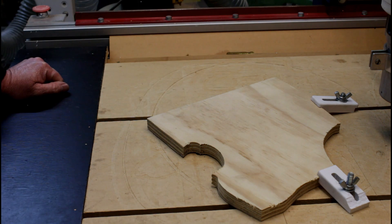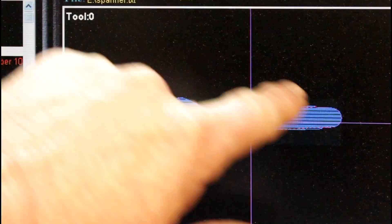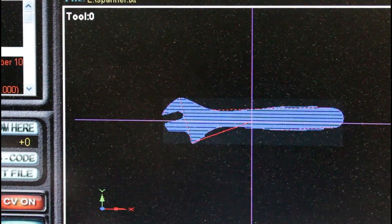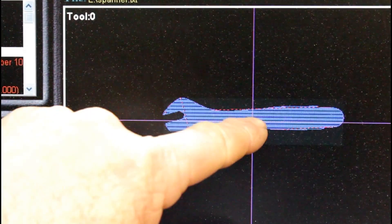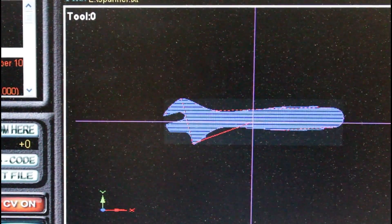Fortunately, there's an easy way of doing that. Notice these purple lines on Mach 3. The intersection of these indicates where the cutter is currently sitting.